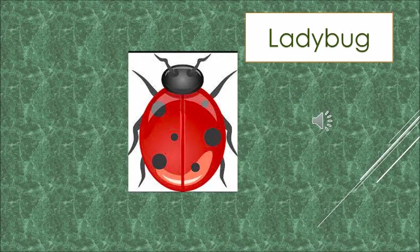Ladybug. And how do we know it is a ladybug? We know it is a ladybug because of its color — red and black color — and it is oval in shape, with its six short legs and the spots on its body. We know it is a ladybug.